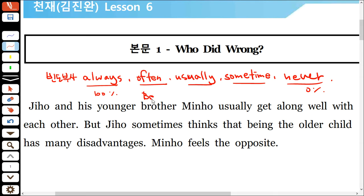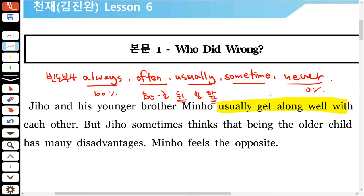위치는 be동사·조동사가 있을 때는 그 뒷자리, 일반동사가 있을 때는 일반동사 앞자리에 오는 게 빈도부사의 위치예요. 첫 번째 문장에서 'usually get along with'를 보면, get along with는 '누구누구와 잘 지내다'라는 뜻의 일반동사이기 때문에 일반동사 앞에 usually가 왔어요.